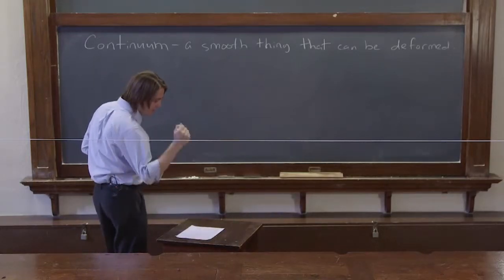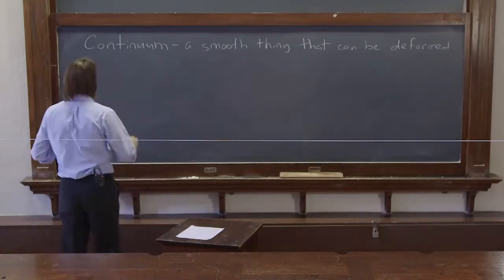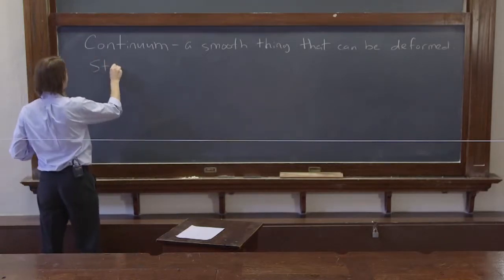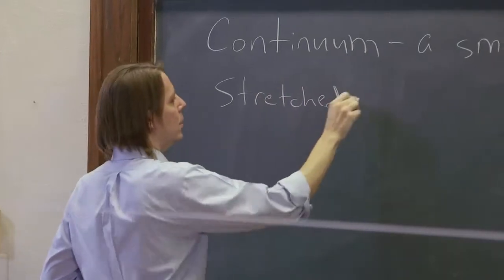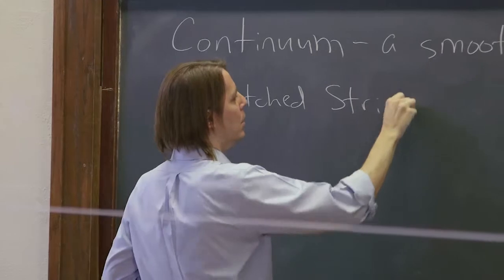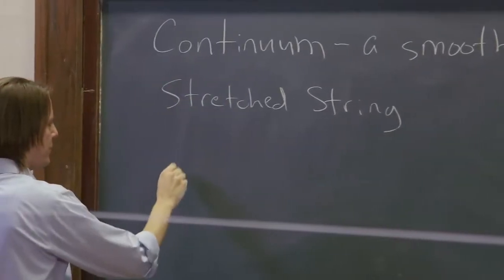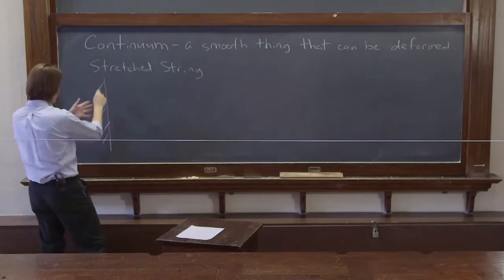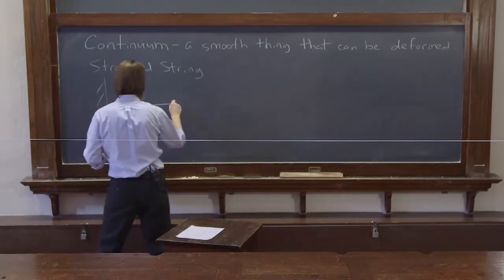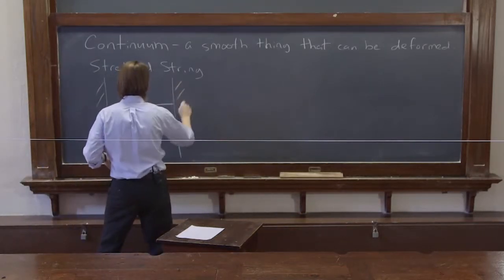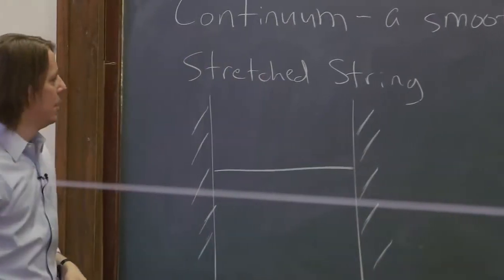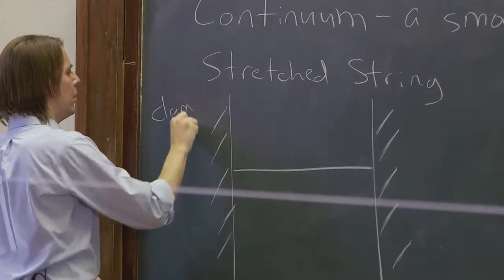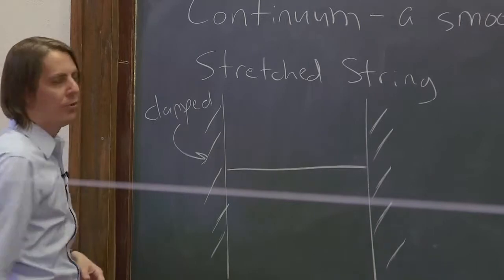So the standard original continuum you always start with is the stretched string. And usually, your stretched string looks kind of like this. And you have it clamped at both ends. So this means a wall. And here's your string. And here's another wall. So it's clamped on both sides.